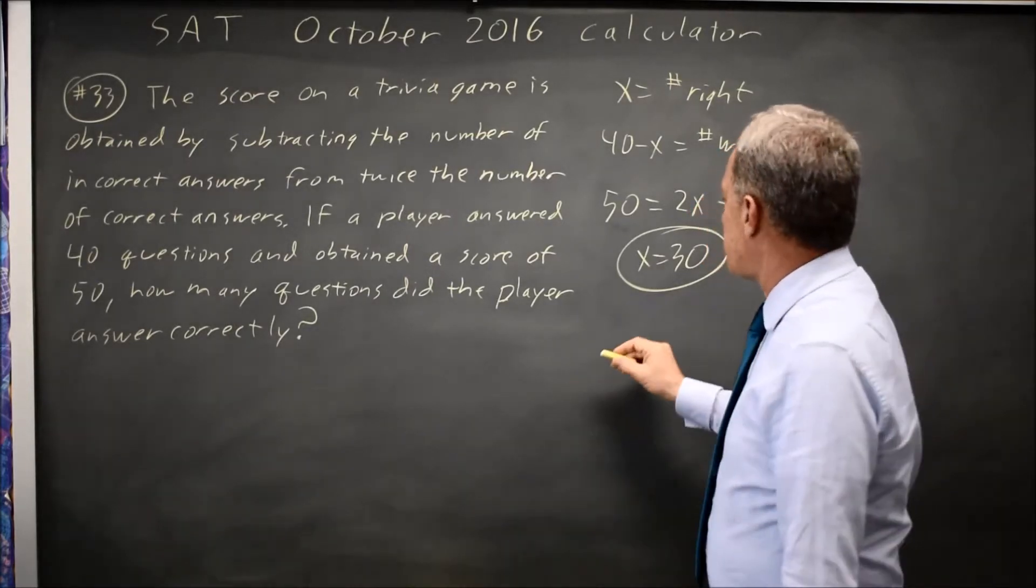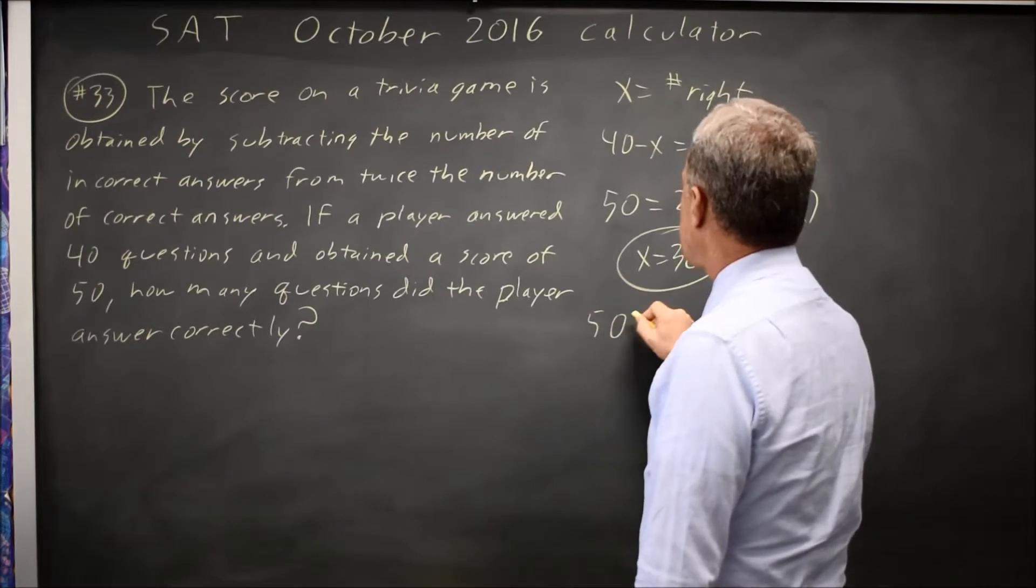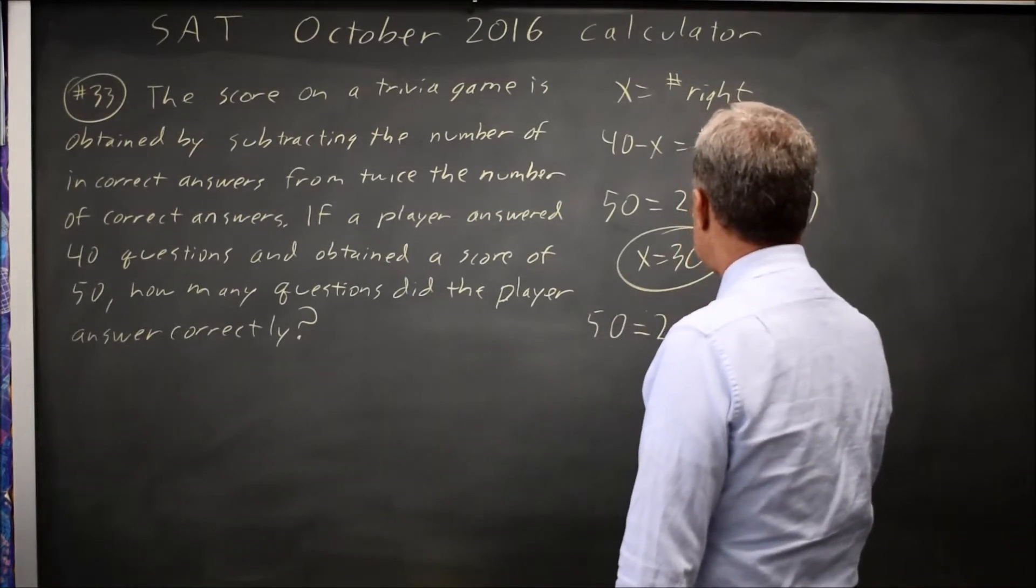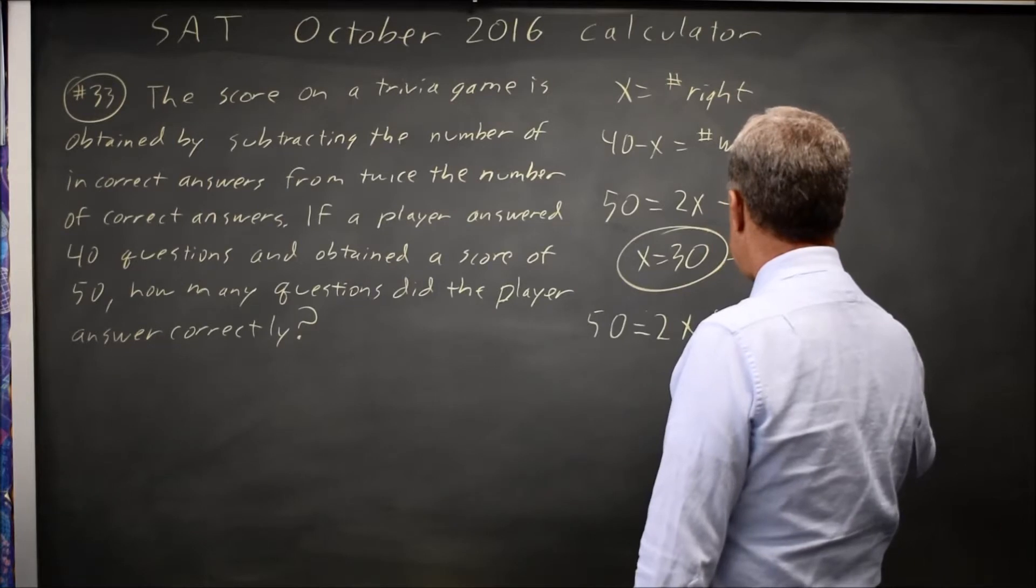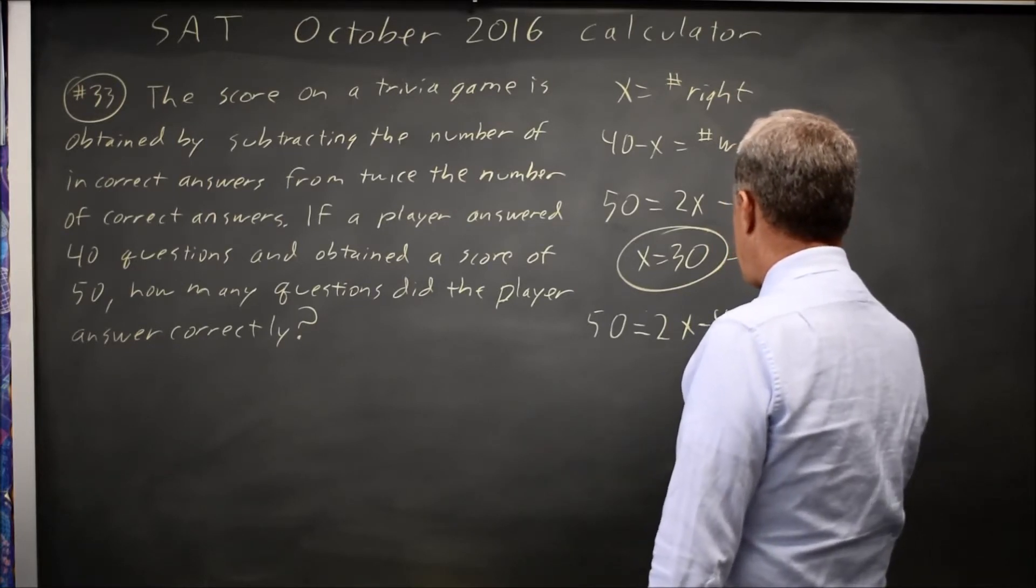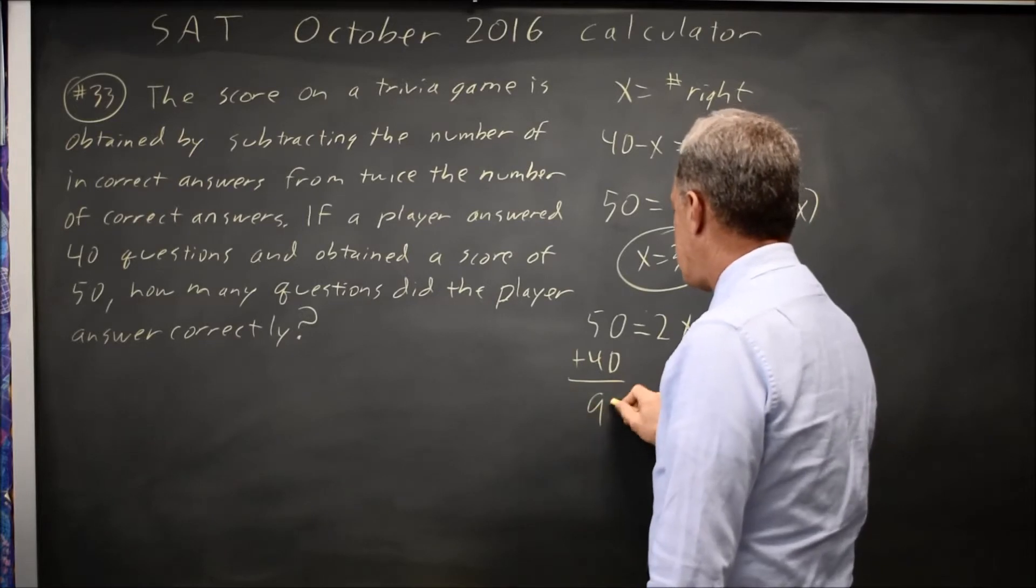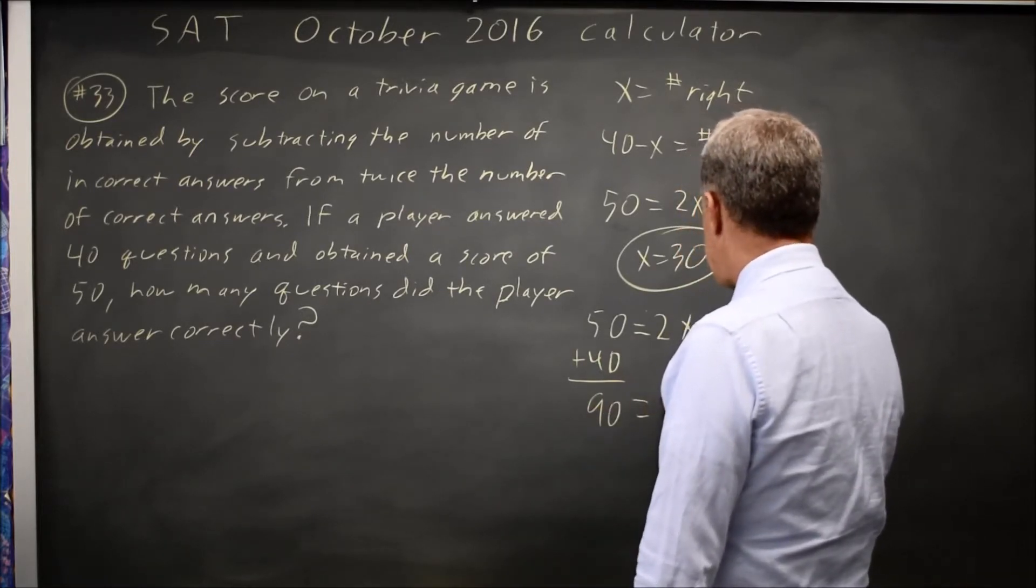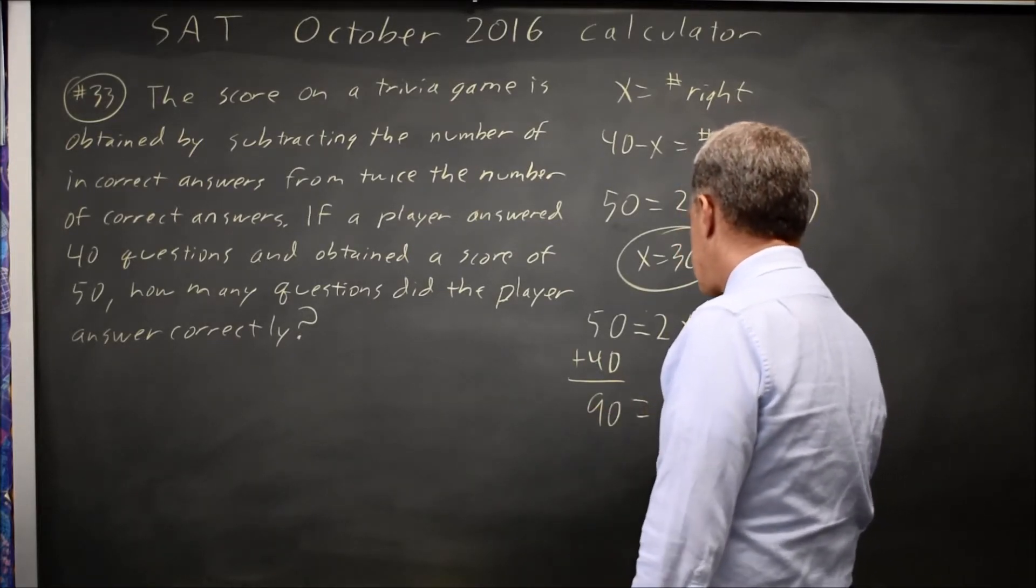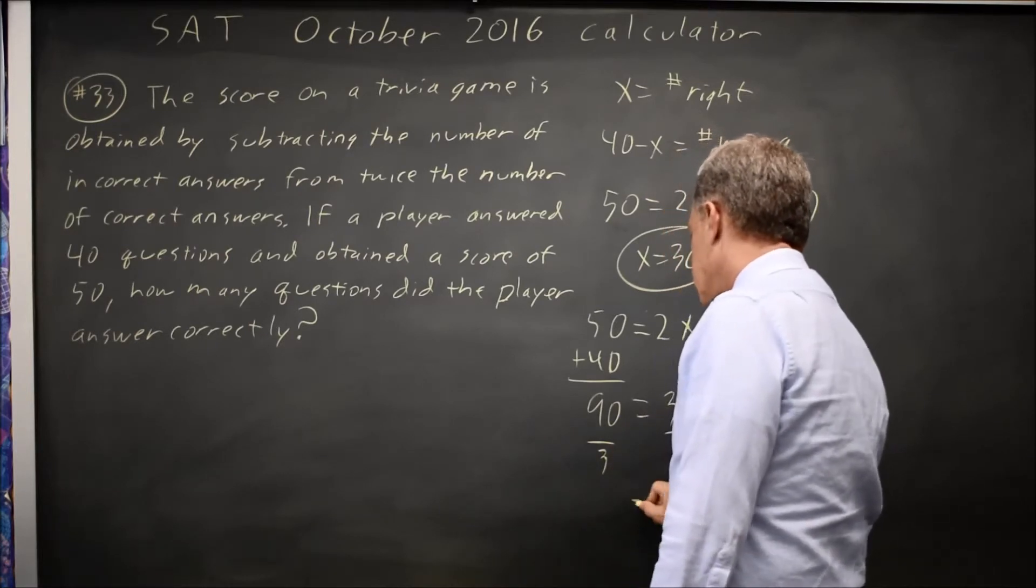If I want to do this algebraically, I have 50 equals 2x minus 40, minus negative x is plus x. Let's add 40 to both sides. 50 plus 40 is 90, equals 2x plus x is 3x. Divide both sides by 3, and I get x equals 30.